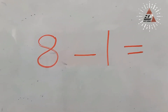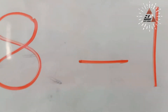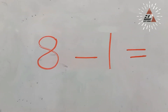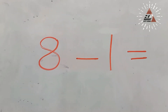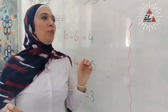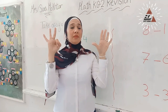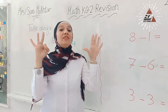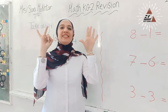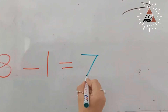Hey KG2. What is this number? 8 minus 1. The bigger number is 8. Now, put number 8 on your hand and take away 1. How many fingers are left? 7. Write number 7.